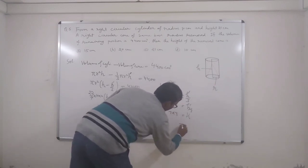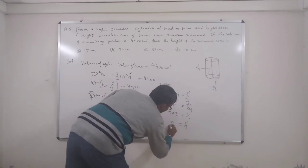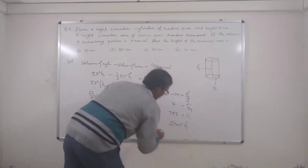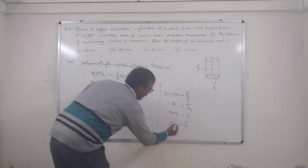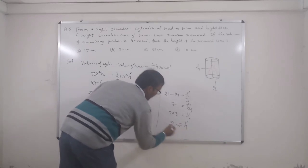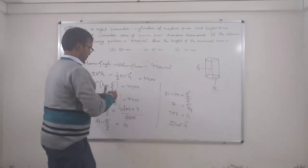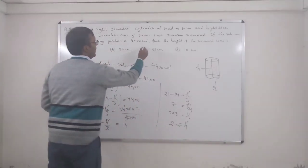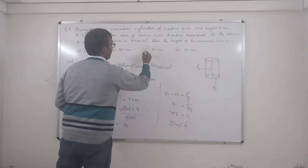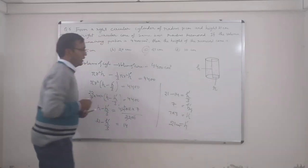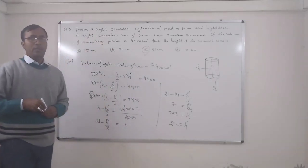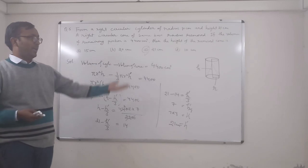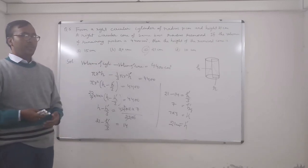So your answer is h' = 21 cm. The removed cone is also of height 21 cm, the same as the cylinder.